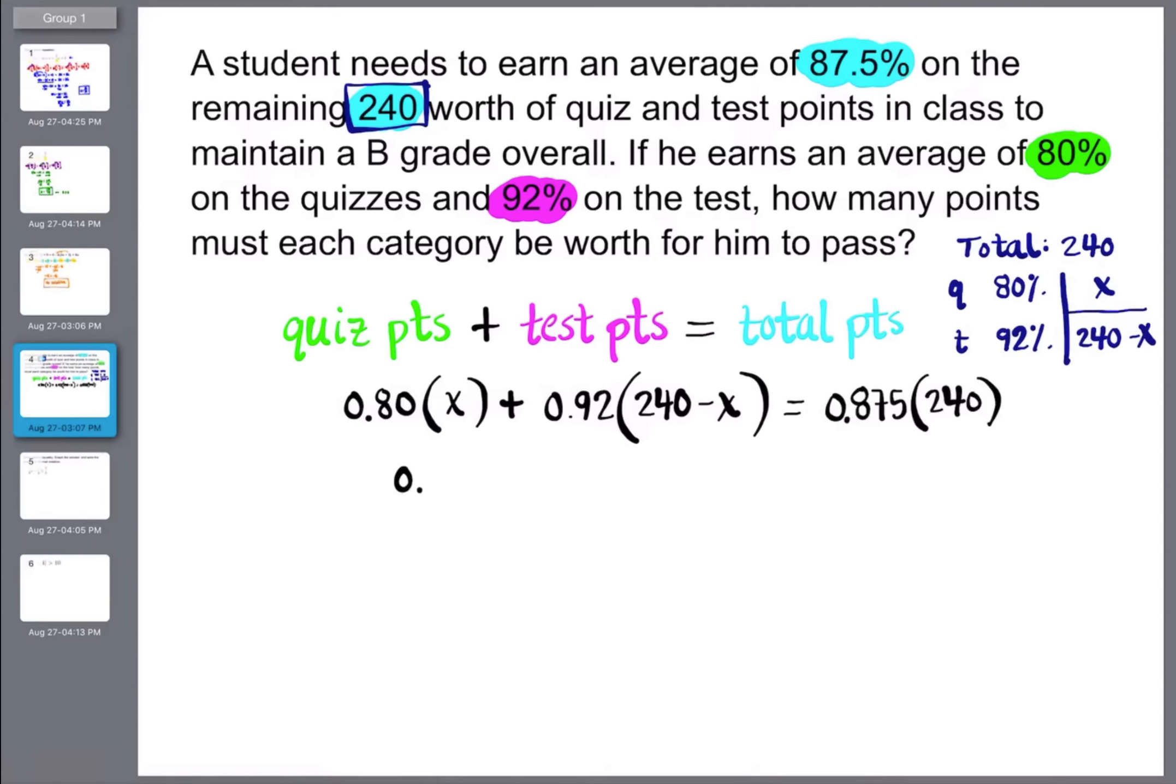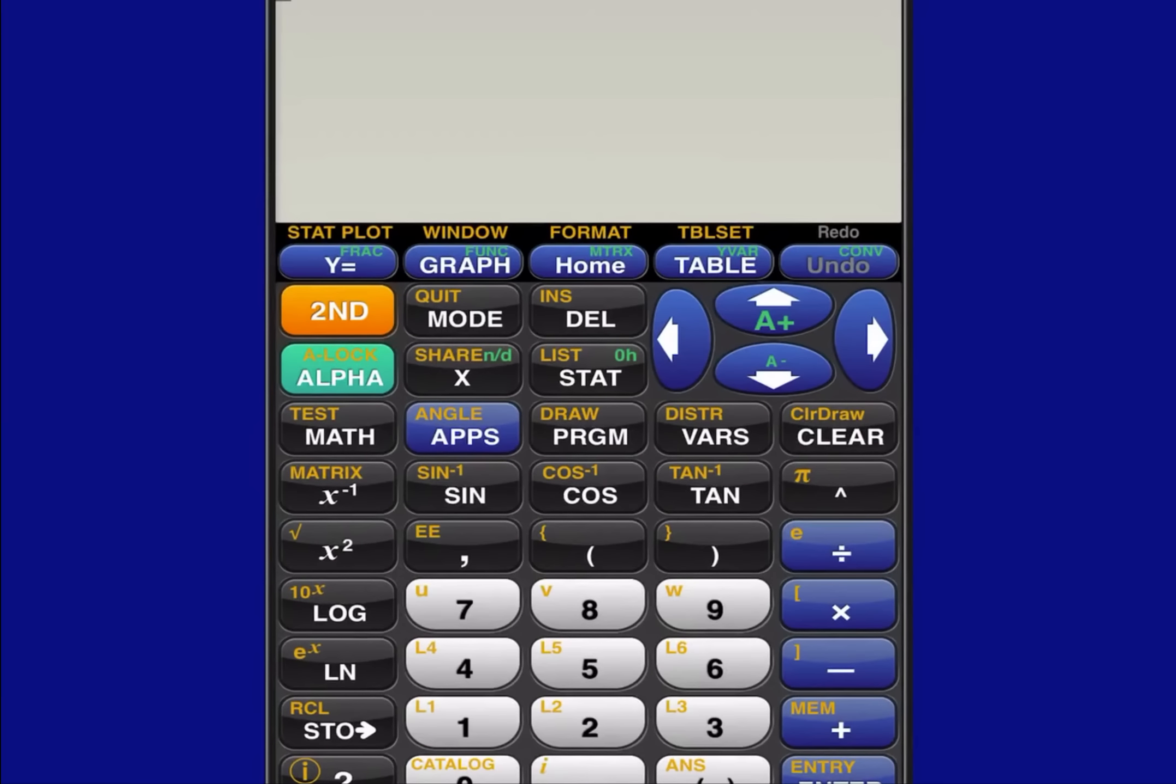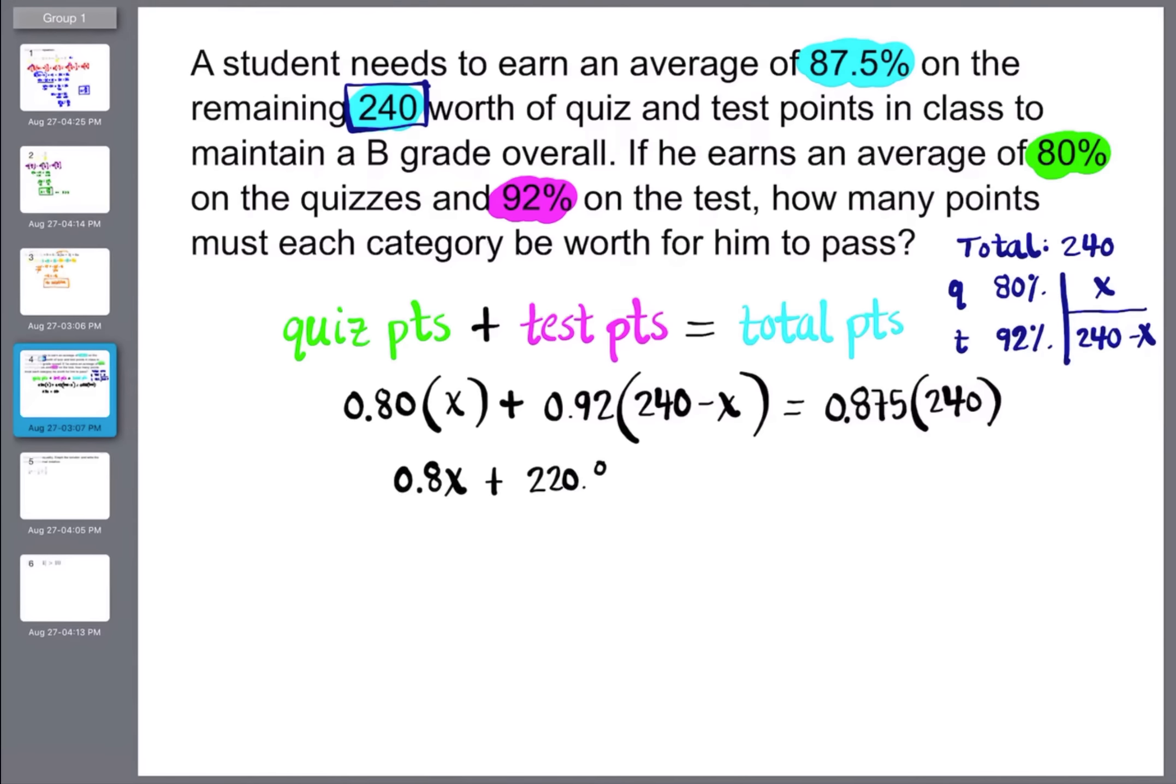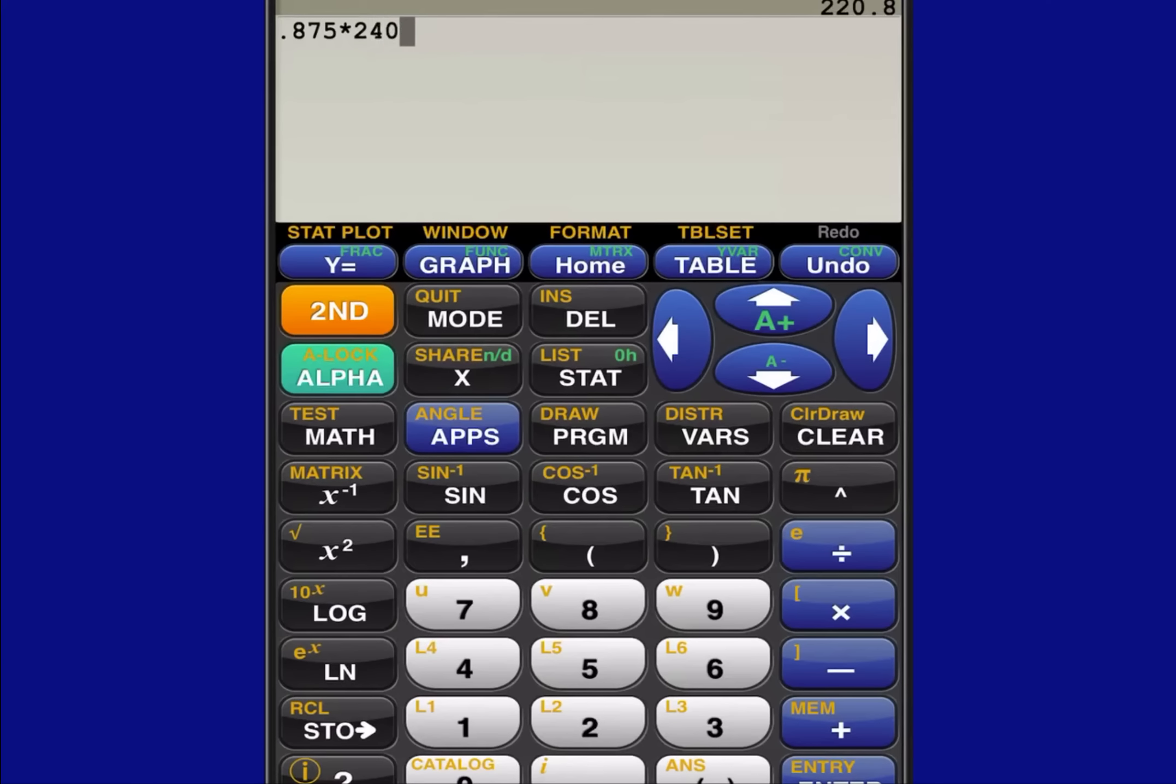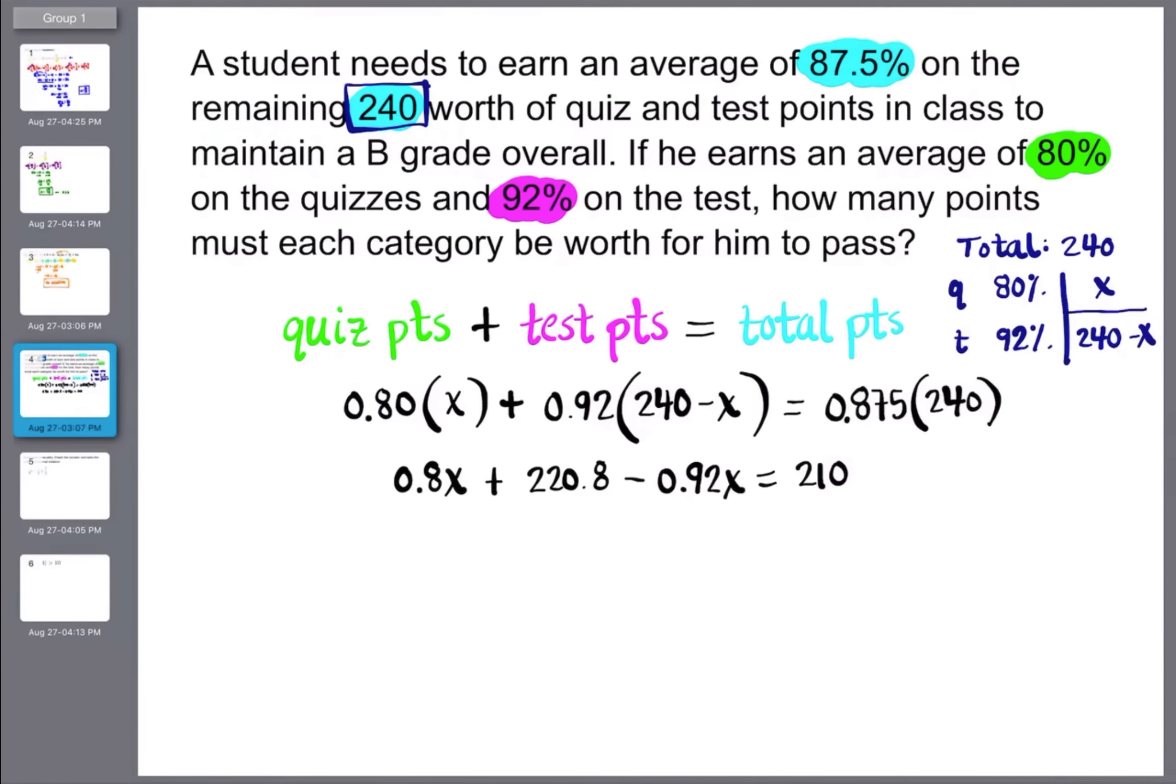So if we go ahead and distribute this out, we have 0.8x plus 0.92 times 240 is going to come out to, let's see here, 8 times 240. I don't know if I trust myself to do it in my head. So if we do it here, 0.92 times 240, 220.8. All right, let's go back. So 0.8x plus 220.8 minus 0.92x is equal to, on the right-hand side, let's do that one, 0.875 times 240. I get 210. So 210.